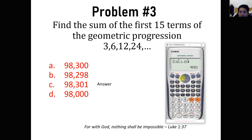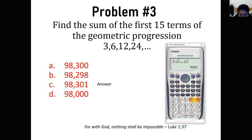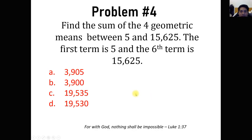If the problem asks for the sum from the 6th to the 10th term, you can simply change the range to 6 to 10. Similarly, if you need the sum from the 1st to the 20th term, just adjust accordingly. In this case, the answer for the first 15 terms is 98,301.